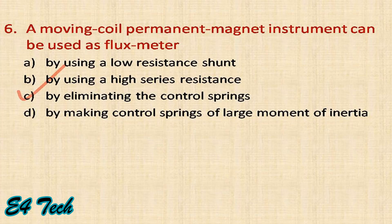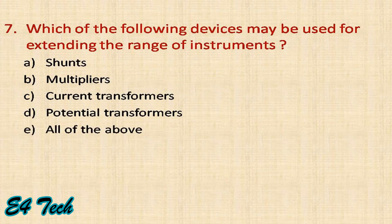Which of the following devices may be used for extending the range of instruments? Shunts are used for extending the ammeter range, and multipliers are used for extending the voltmeter range. Current transformers (CTs) and potential transformers (PTs) are also used. The answer is all of the above.